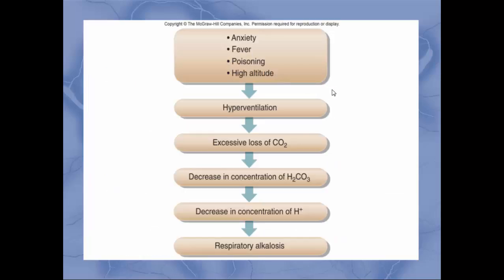A flow chart summarizes respiratory alkalosis: anxiety, fever, poisoning, or high altitude triggers faster breathing → hyperventilation → excessive loss of CO₂ → decreased concentration of carbonic acid → lower concentration of hydrogen ions → respiratory alkalosis. That brings us to the end of this chapter on acid-base balance, water, and electrolytes. If you have any questions, please post them to the discussion board.